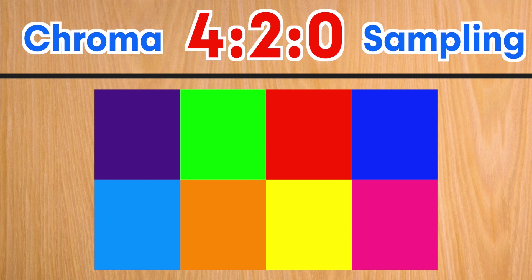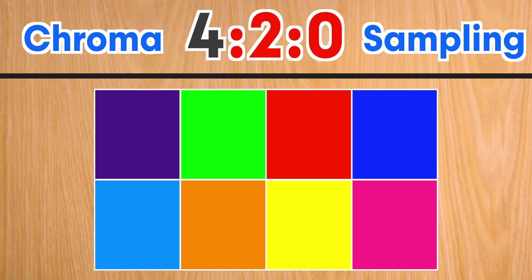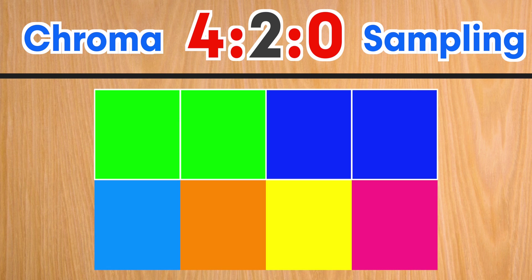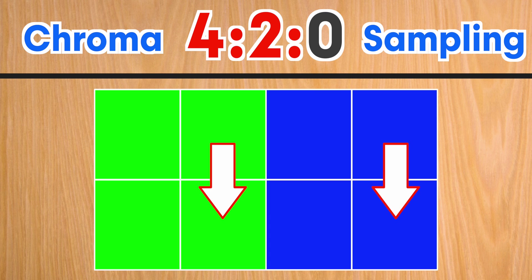When we move to 4:2:0, which is the most common option among consumer-level DSLRs and mirrorless cameras, you once again have the brightness information of all pixels recorded, as shown by the 4. Like in the last example, the first 2 tells us that color information of only 2 pixels in the top row is being recorded and copied to adjacent pixels. But the 0 tells us that no color information is recorded from any of the bottom row pixels — instead, the color from the top pixels is copied down. This chroma sampling saves only 25% of the original color the camera sees, but saves a lot of space and is barely noticeable in most cases.